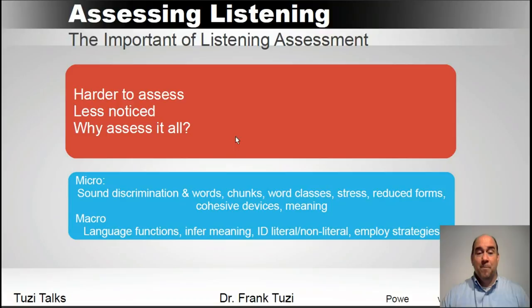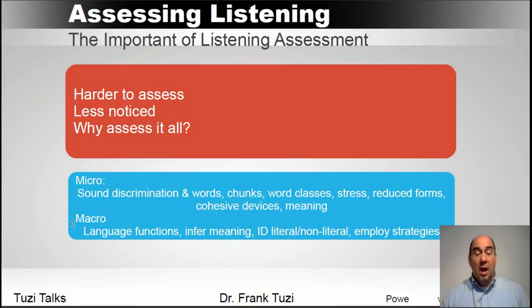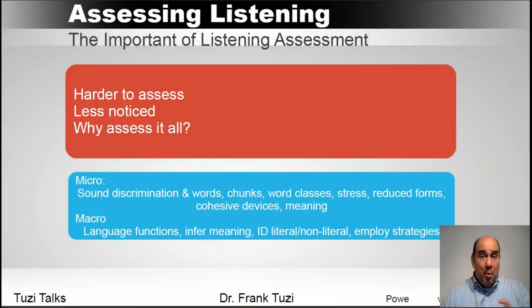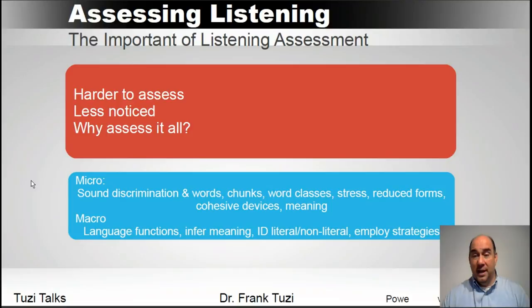A couple of things you can study: micro skills and macro skills. Your micro skills are very small sound segments — the sound discriminations between two different letters, a word chunk, word classes, or stress in English. For example, the word 'import': if I emphasize the first syllable, 'import,' that's one word, but 'import,' stressing the second, is a different word. You can also talk about reduced forms, which we use all the time in English — 'I am going to' is reduced down to 'I'm gonna.' You can talk about cohesive devices and obviously the meaning of words.